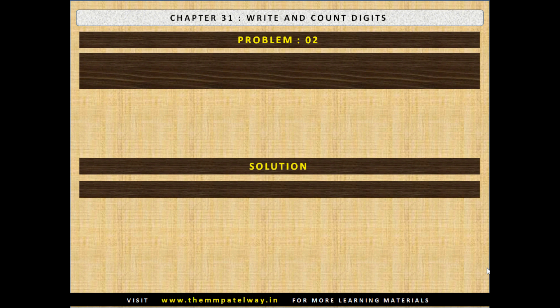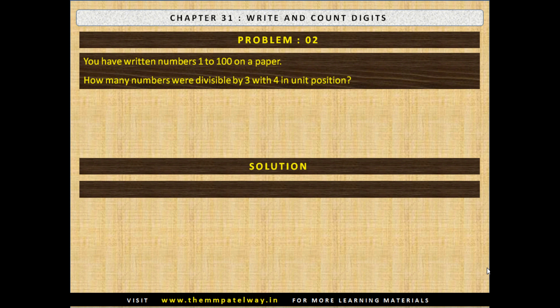Problem No. 2: You have written numbers 1 to 100 on a paper. How many numbers were divisible by 3 with 4 in the unit position? Now stop the video and find the solution. The solution follows: there are 3 such numbers — 24, 54, and 84.